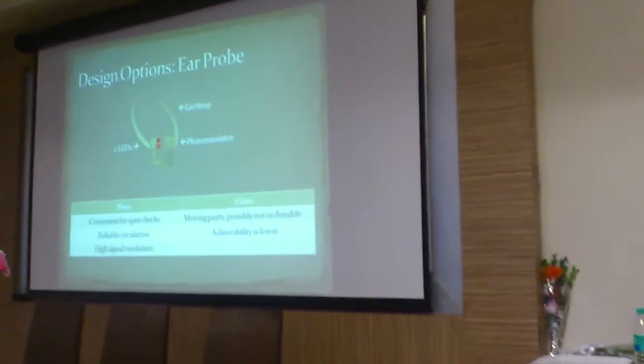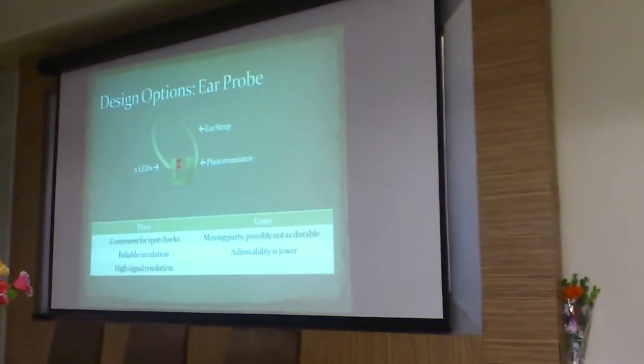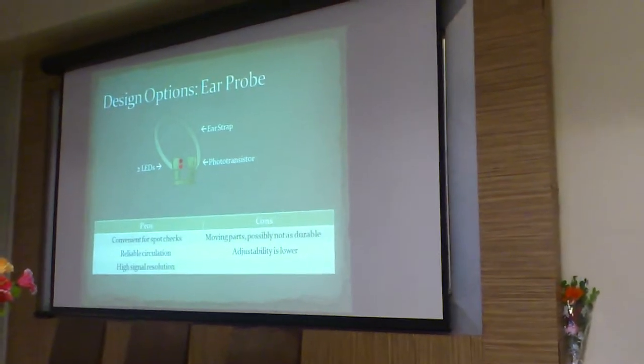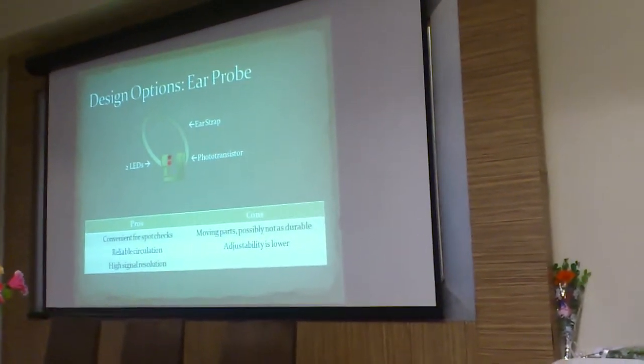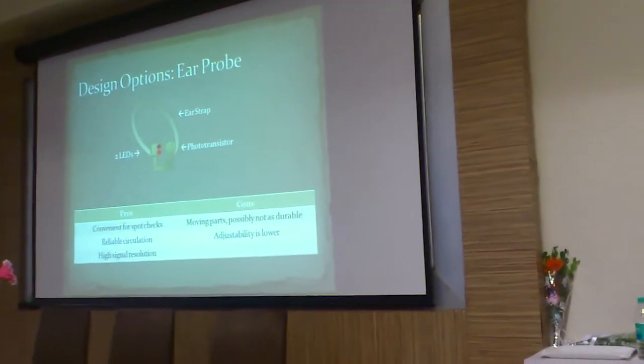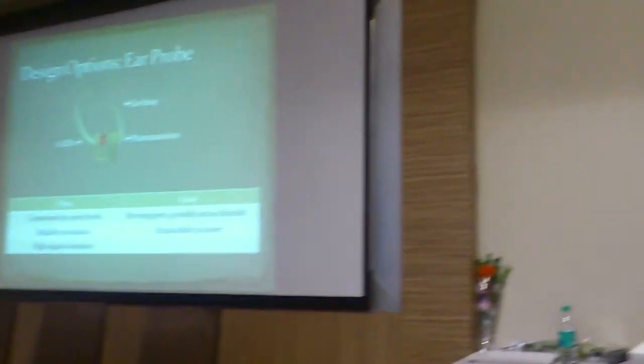The earlobe sensor is the best. You wear it like an earring. You have a phototransistor as the detector and two LEDs on one side. The advantage of the earlobe is there is no bone mass, so there is no attenuation — you get a maximum signal from the detector. Advantages: convenient for spot checks, reliable circulation, high signal resolution — remember, resolution and precision are different things. Cons: moving parts, possibly not as durable, and if you touch the earlobe the signal is disturbed. So it is not recommended in terms of resolution and durability.